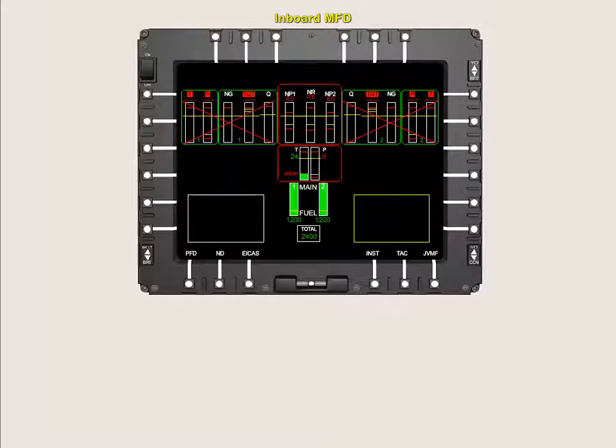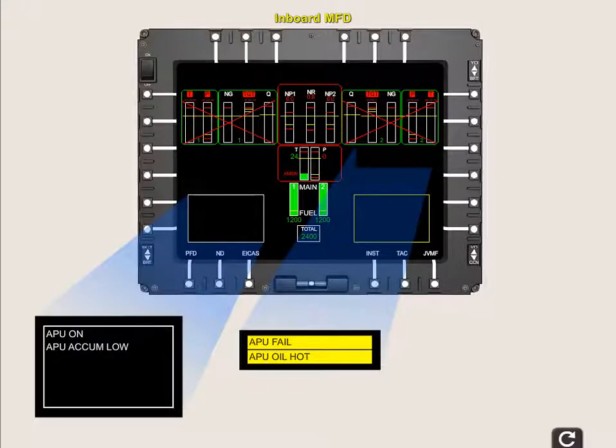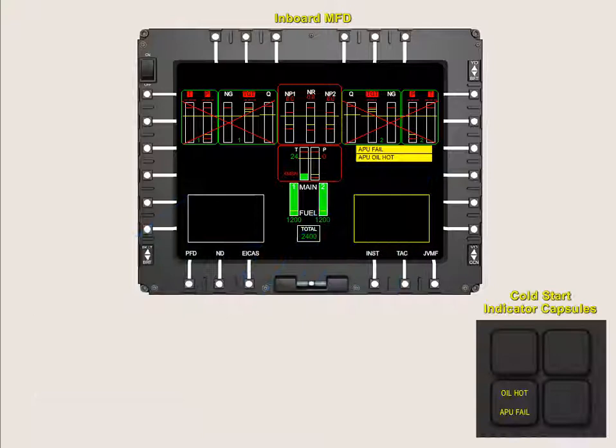Each of the cold start indicators has a corresponding legend that appears on the ECAS displays on the pilot and co-pilot's inboard MFDs. The purpose of the cold start indicators is to give the pilot status indications during APU start before AC power has been applied to the aircraft and MFDs have been turned on. The APU fail caution will appear and the APU fail capsule on the upper console illuminate any time the APU automatically shuts down.